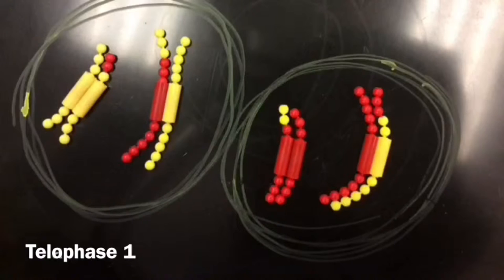In telophase I, the spindle fibers disappear and the nuclear envelope forms around each homologous pair. The cleavage furrow forms and separates the nuclei from each other.